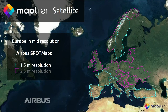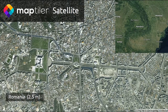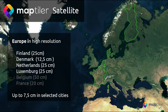We are now rolling out a major update also over Europe, bringing mid-resolution imagery from Airbus. We are integrating SPOT maps at 1.5 and 2.5 meter resolution country by country — it is happening now. We are also gradually adding high resolution imagery from around 20 centimeters up to 7 centimeters in selected cities. Finland, Denmark, Netherlands, and Luxembourg are already available; Belgium and France are in the pipeline, and more countries will come soon.